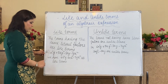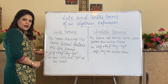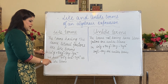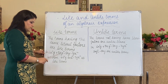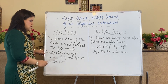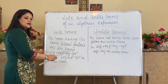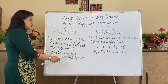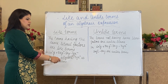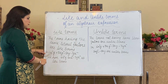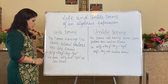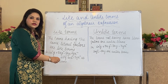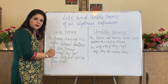If we have terms with the same literal or variable factors, they are known as like terms. For example, in the expression 6x²y + 5xy² - 8xy + 7yx², in 6x²y, x appears 2 times and y 1 time. In 7yx², x also appears 2 times and y 1 time. So the first term and the last term have the same literal factors.